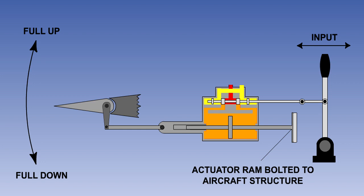The powered flying control unit, or PFCU, is the same, except that in this case, the actuator ram is bolted to the aircraft structure. This means that the ram cannot move. The pilot's control only operates the servo valve.